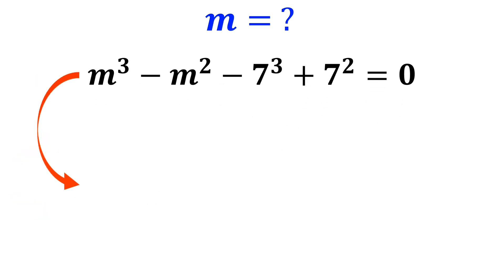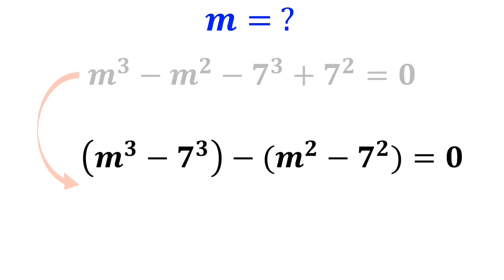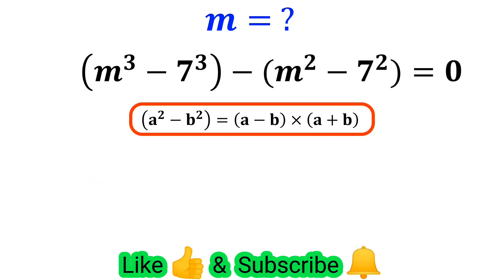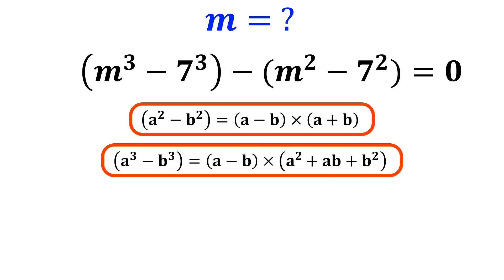This gives us m cubed minus m squared minus 7 cubed plus 7 squared is equal to zero. Now, we rewrite this equation as follows: m cubed minus 7 cubed minus m squared minus 7 squared is equal to zero. According to the conjugate identity, a squared minus b squared equals a minus b times a plus b. And according to the difference of cubes identity, a cubed minus b cubed equals a minus b times a squared plus a times b plus b squared.